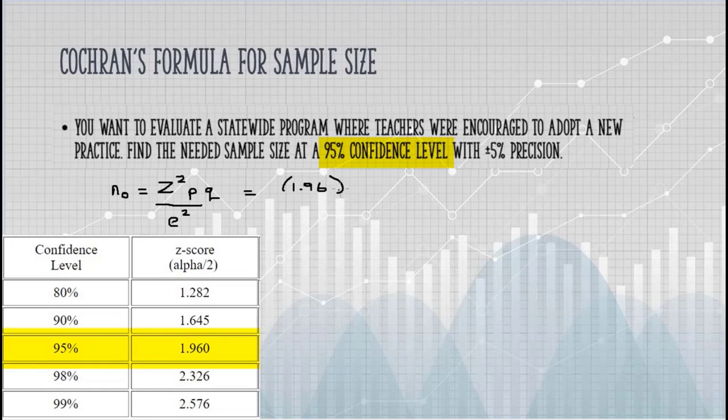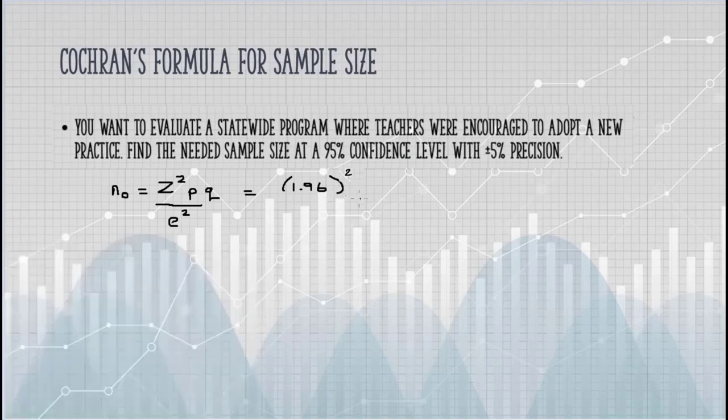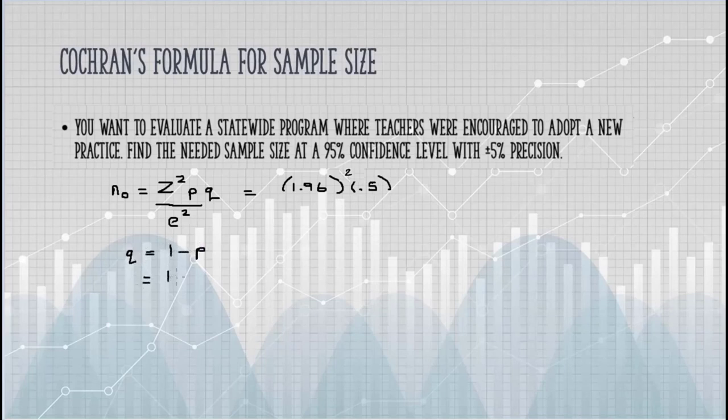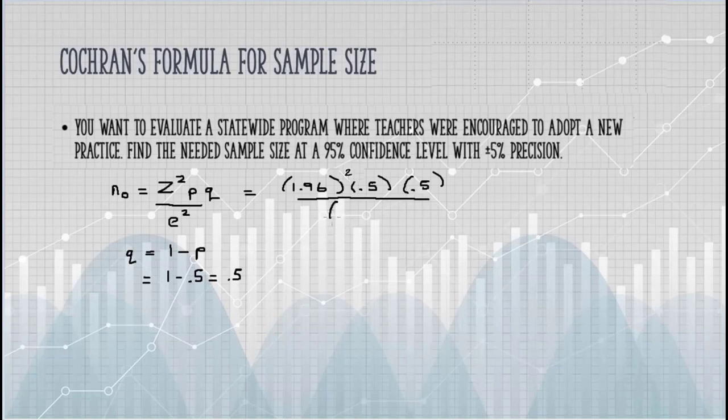P is the estimated proportion of the attribute present in the population. In this case, the proportion of teachers that adopted the new practice. We don't know the variability in the proportion, so we're going to use 0.5, which is maximum variability. Q is 1 minus P, so 1 minus 0.5 is 0.5. The precision level is given in the question as 5%, that's 0.05, and that's going to be squared.